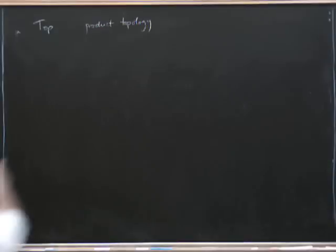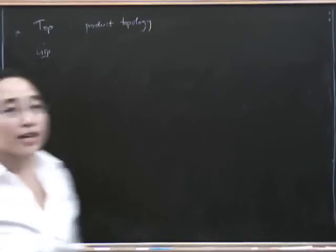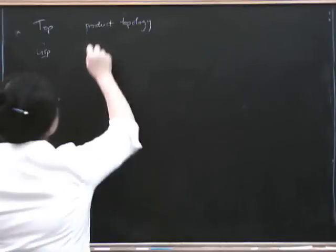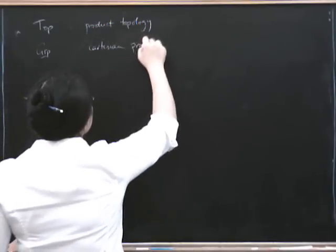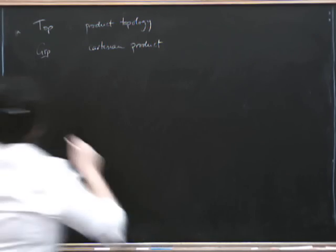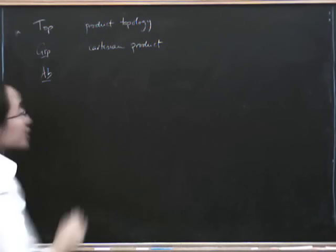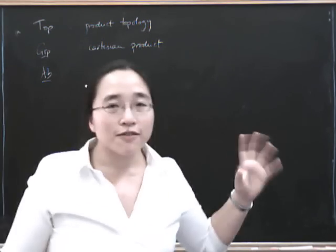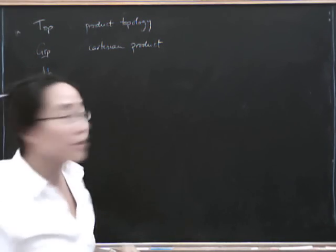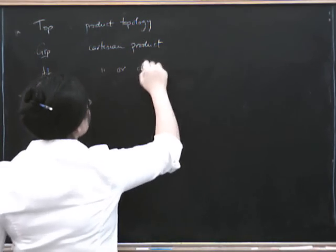Another place you can take products is in the category of groups, where you can take the Cartesian product of two groups. And that's absolutely fine. Another place you can take them, well, if you restrict it, Abelian groups, it's still the Cartesian product, but in a slight fit of confusing terminology, that sometimes also gets known as the direct sum.